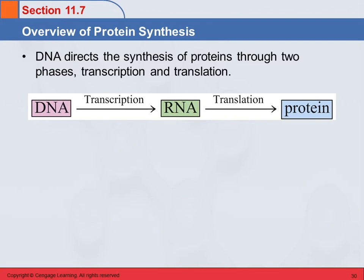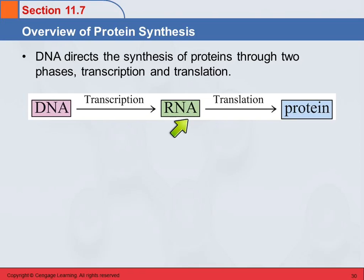So what's DNA good for? DNA directs the synthesis of proteins. This is just an overview. You've got the DNA, and through a process called transcription, RNA is formed, and then the RNA undergoes translation to actually form the protein.